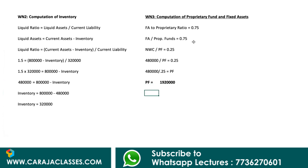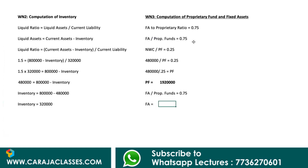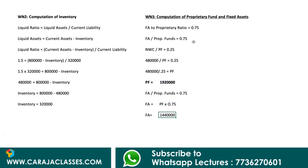Using the proprietary fund value, we find fixed assets. Fixed assets equals proprietary funds multiplied by 0.75, so fixed assets equals 19,20,000 into 0.75, which gives 14 lakh 40,000.